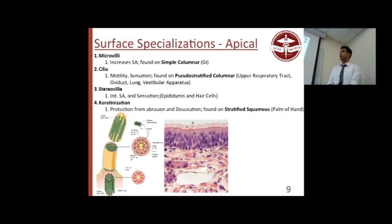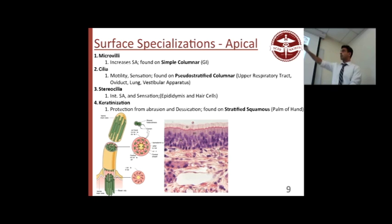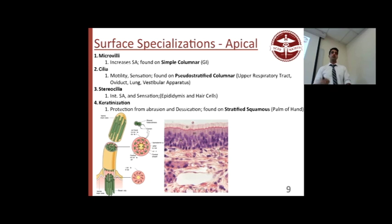There are different types of microvilli. Stereocilia is actually a type of microvilli — don't forget that. Microvilli increase surface area and are found where you have a lot of absorption happening, like the GI tract. If you increase the surface area by having microvilli, it's just more efficient for absorption.